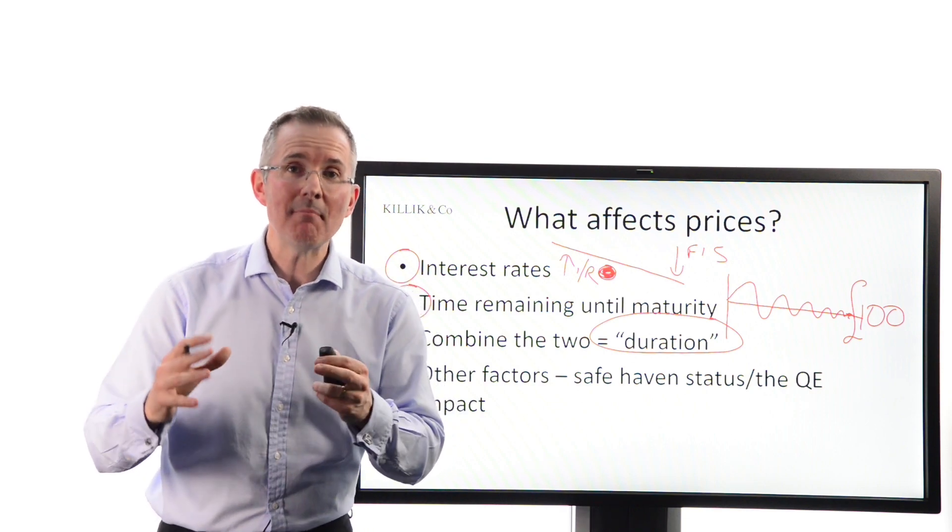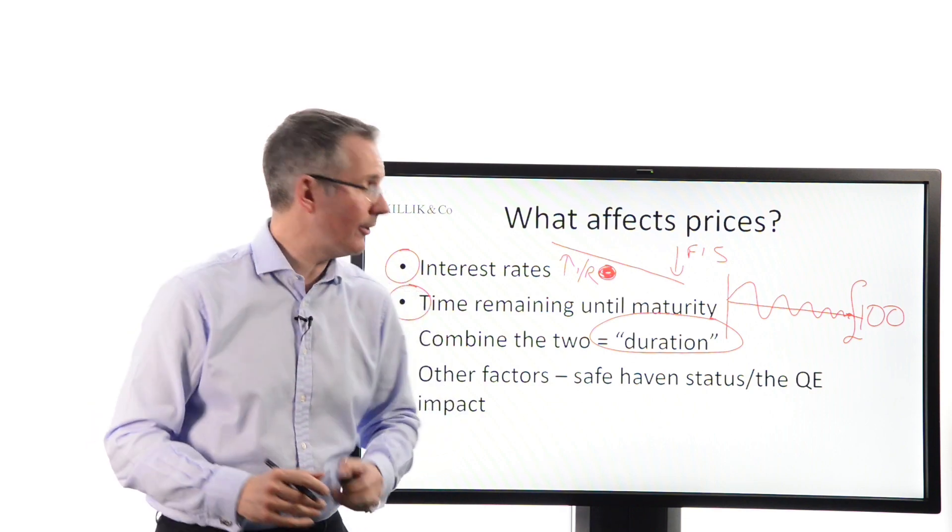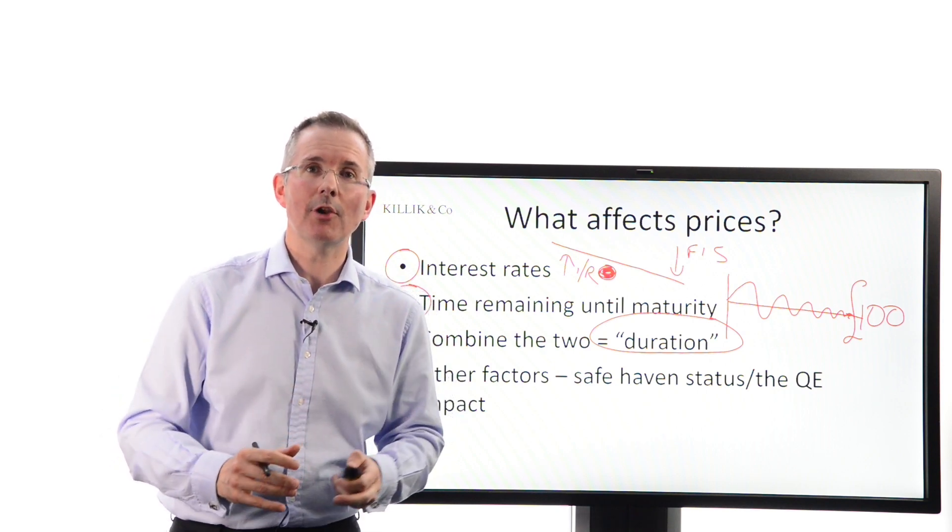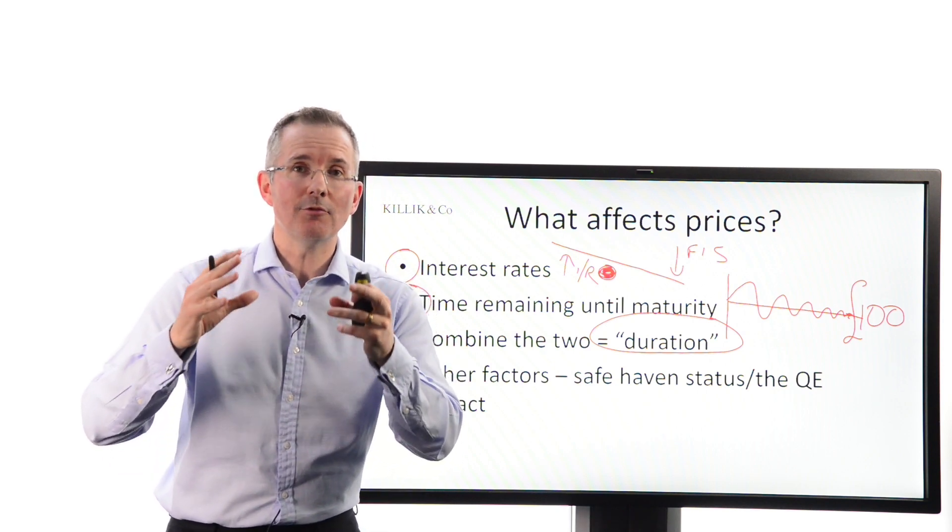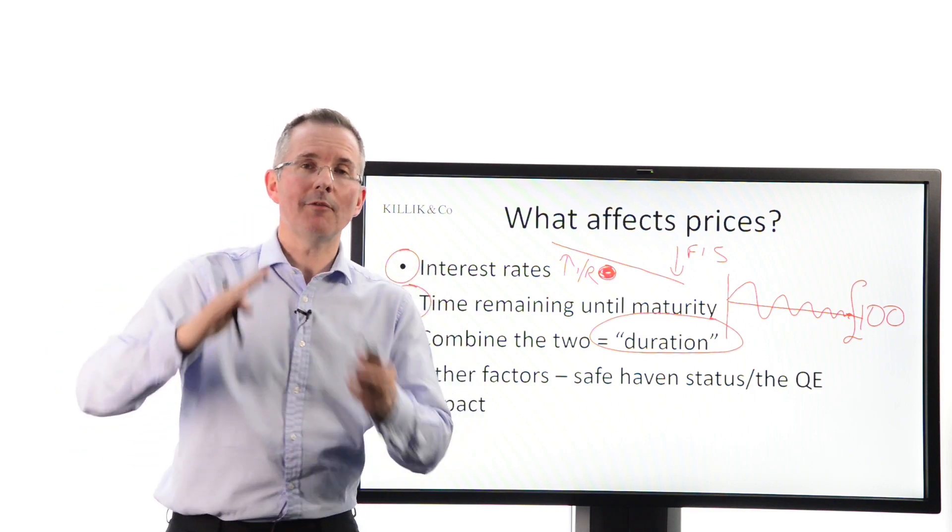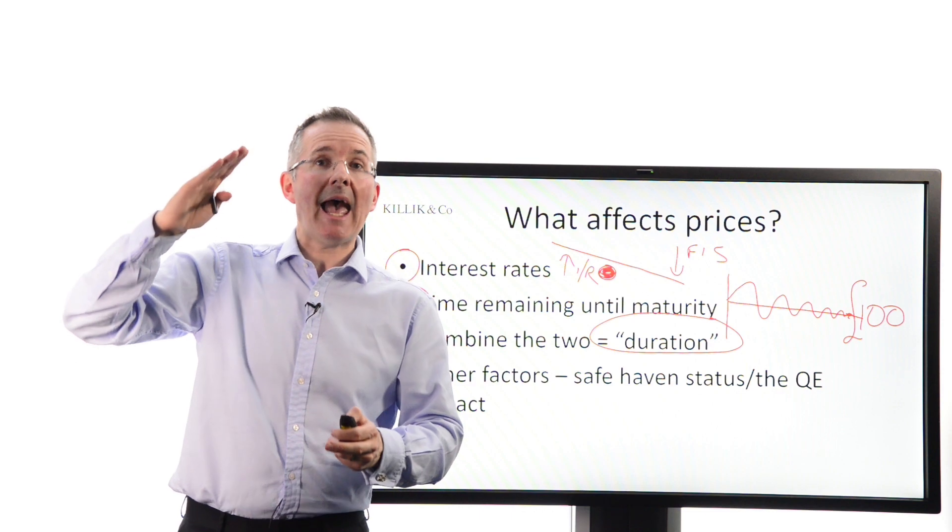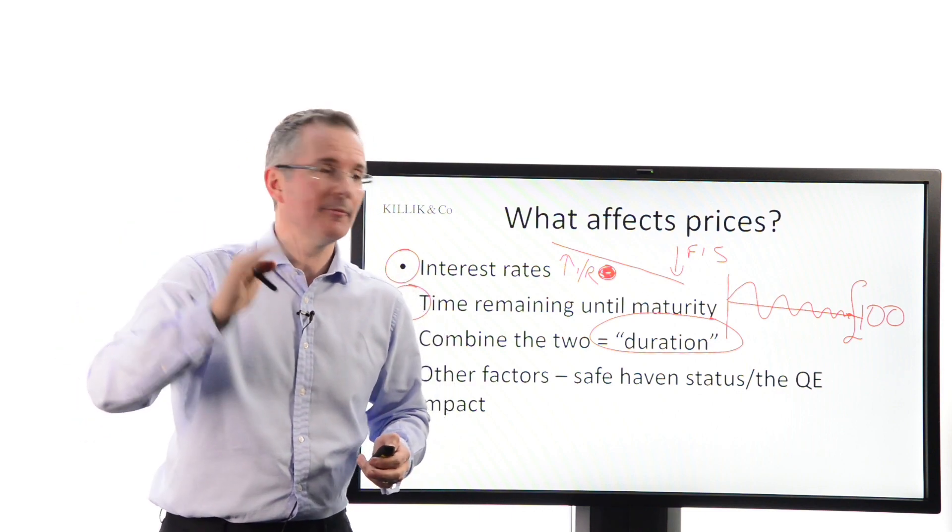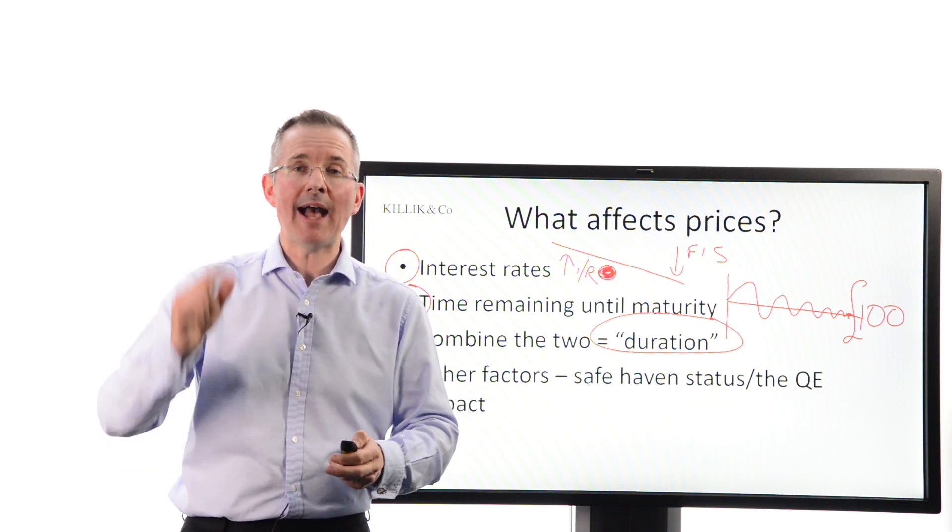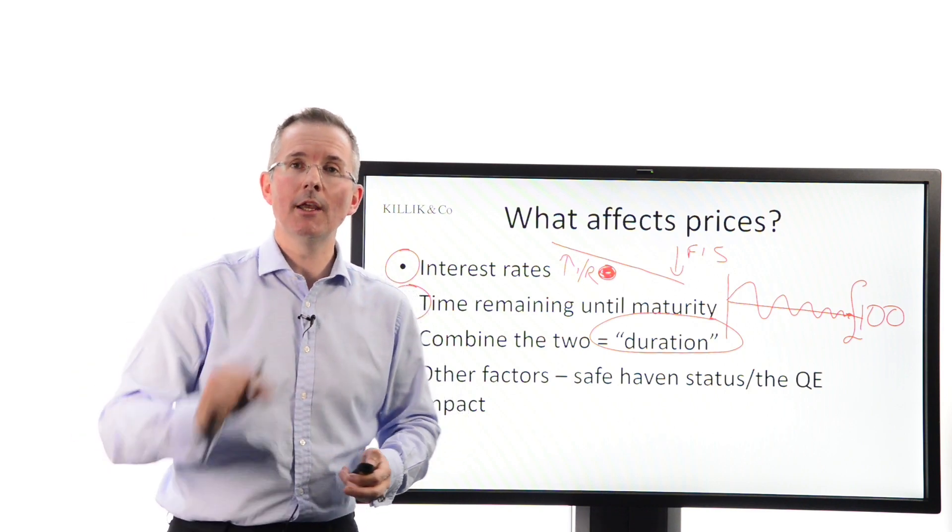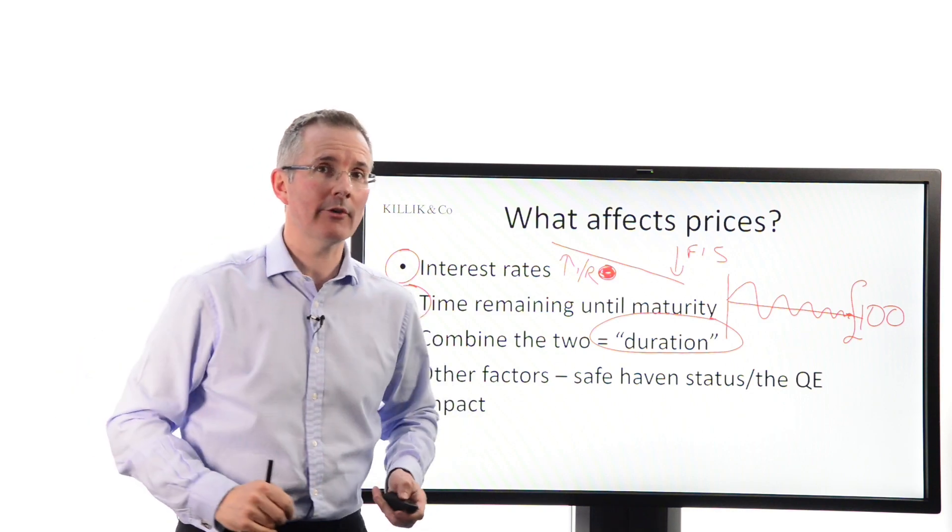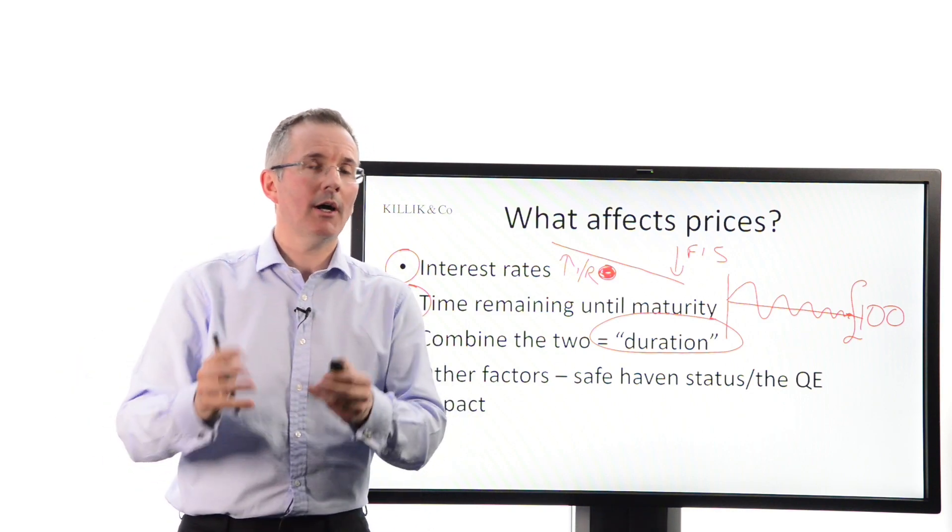Other factors can have a big impact on certain types of fixed income security. For example, government IOUs, fixed income securities, those have been attractive recently after the credit crisis as a safe haven. So simply the fact of people piling in looking for a safe home for their money has driven up prices. Also quantitative easing, QE impact, that's central banks printing money to buy fixed income securities. Again, if they do that, that's going to tend to drive up the price. And we'll see that impact in just a moment.